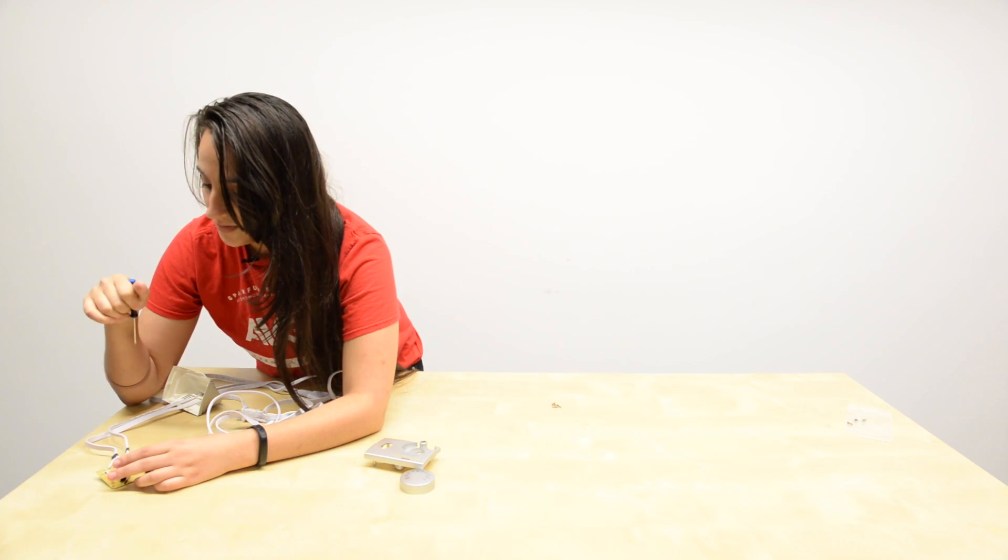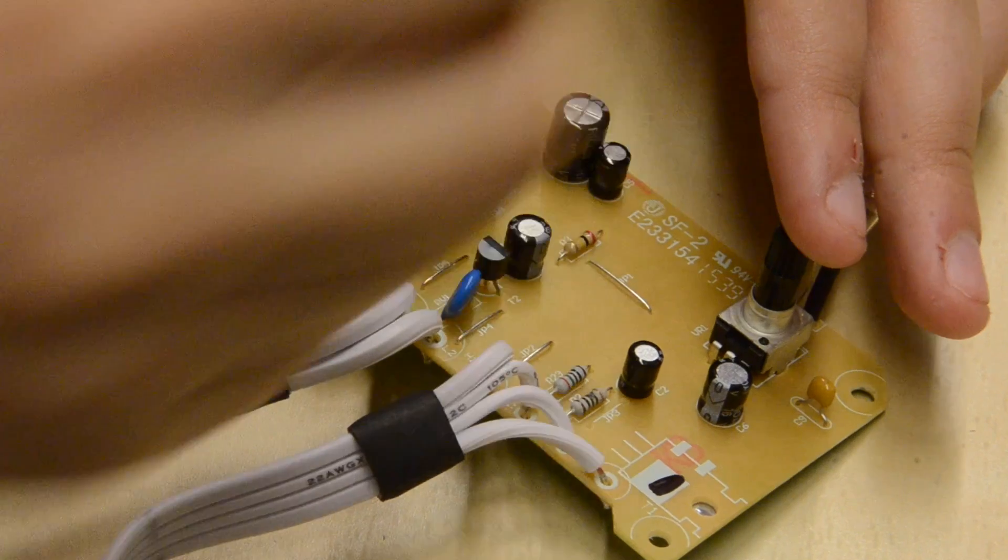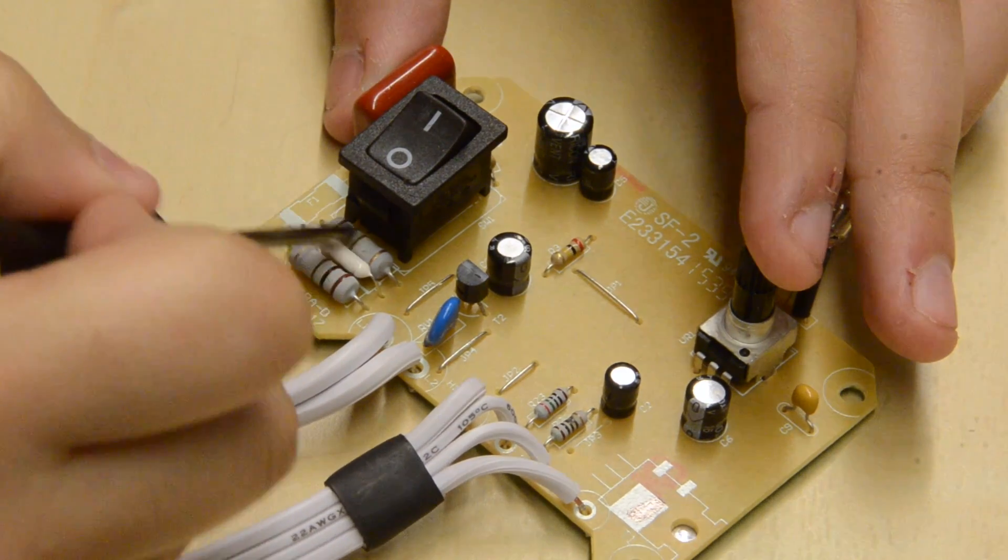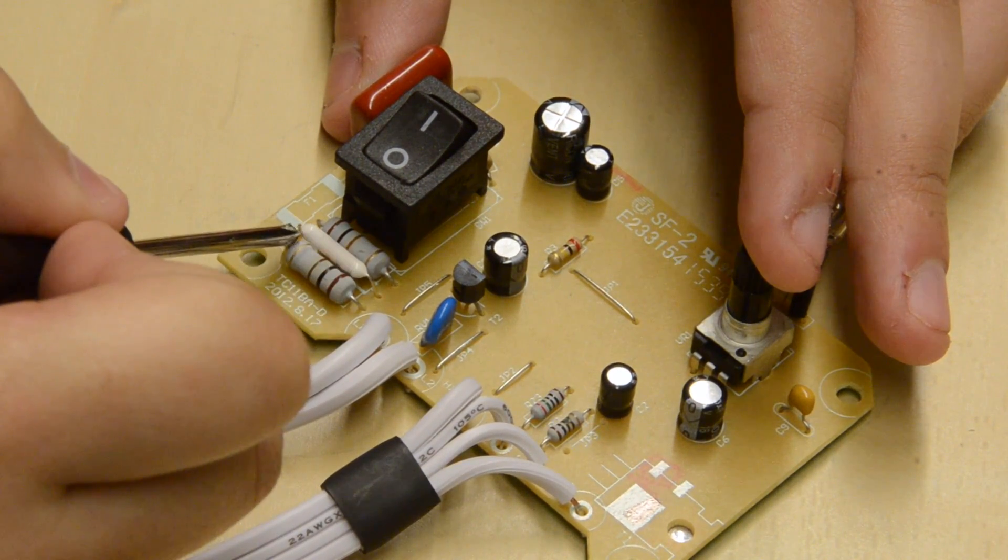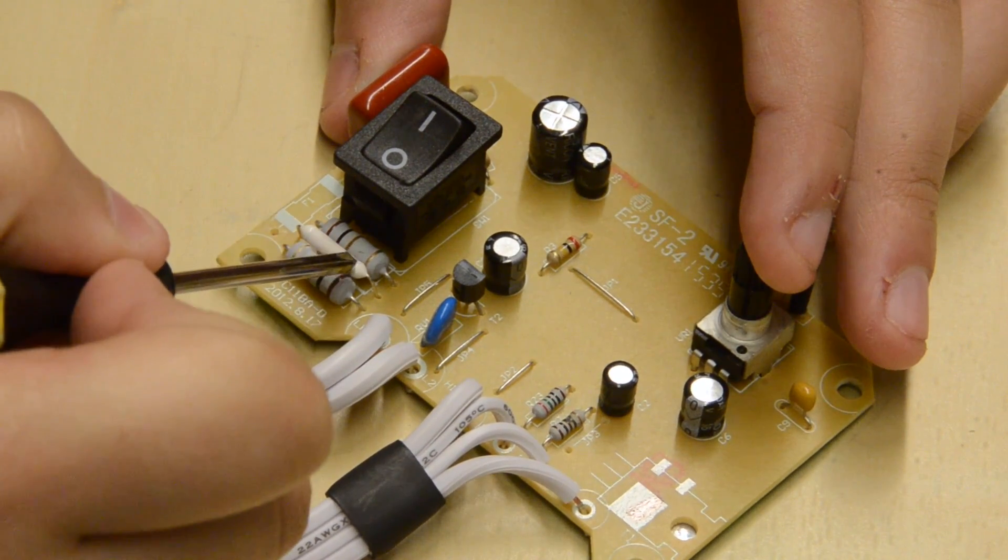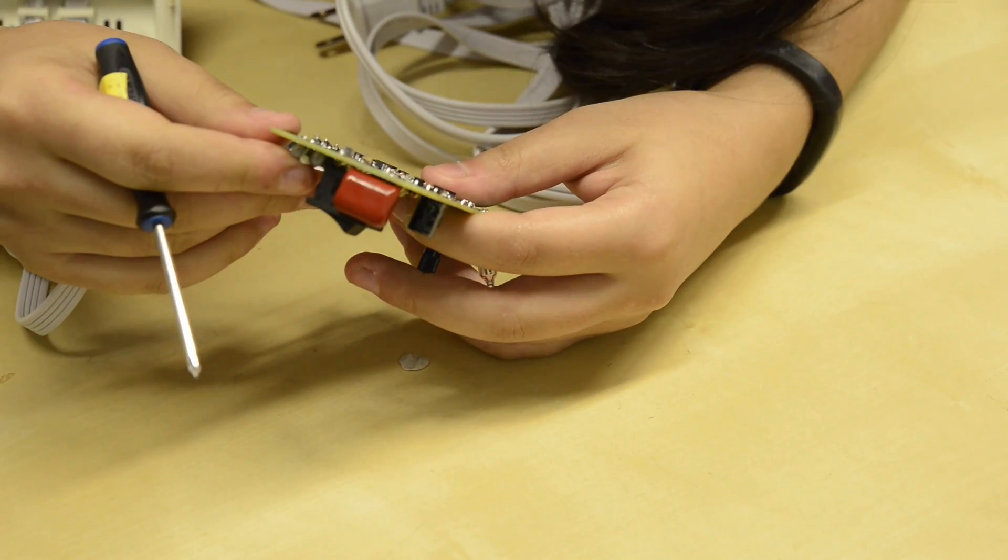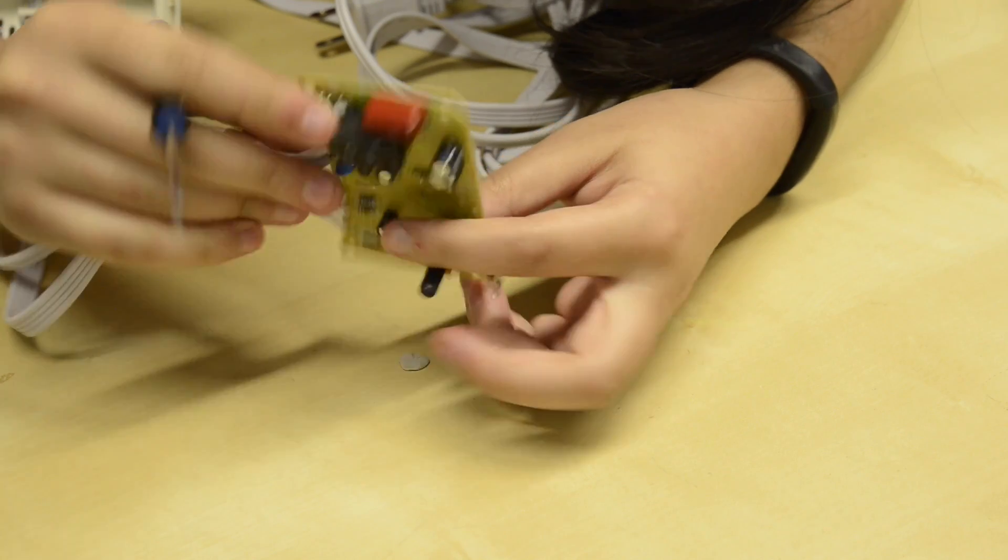And this little guy right here, looking at where he's hooked up to, which is just the switch, he could be a debouncing capacitor, but he's probably more likely a PTC thermistor.